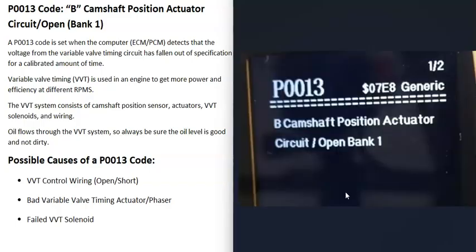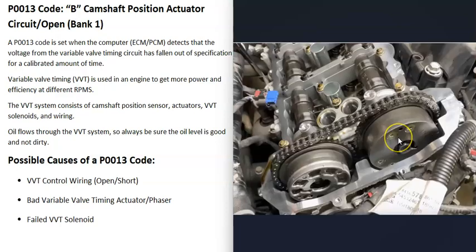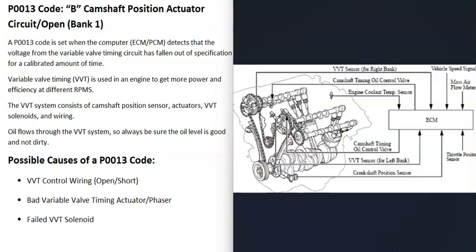The first possible cause of a P0013 code is some kind of wiring problem. If there's anything going on with the variable valve timing wiring, that's going to cause problems. You'll want to get a wiring diagram for your specific vehicle, since differences vary by year, make, and model. Using the wiring schematic, you can test and check all the wires going back to the computer, verify components are getting voltage, confirm good grounds, and also check any related fuses.